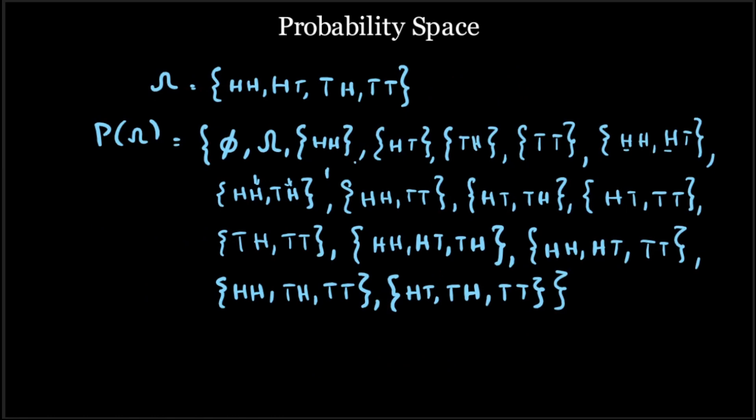We can define a power set P of omega as the set of all possible events that are outcomes of this random experiment. The power set is nothing but the set of all possible subsets of omega. With four elements in omega, the power set will have 2^4 = 16 elements. The power set P of omega contains all measurable events that are possible outcomes of this random experiment.